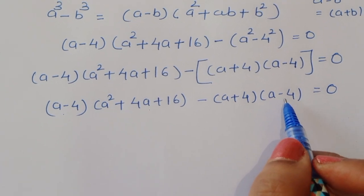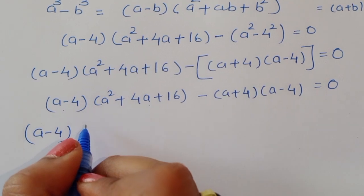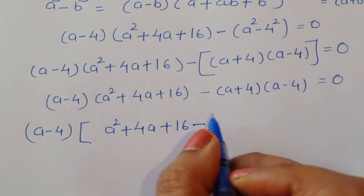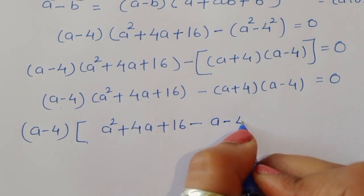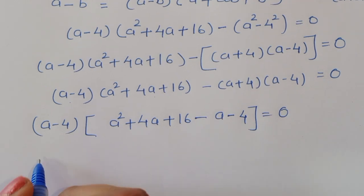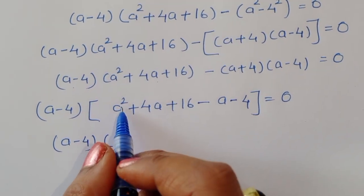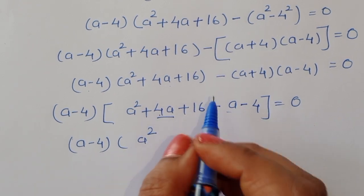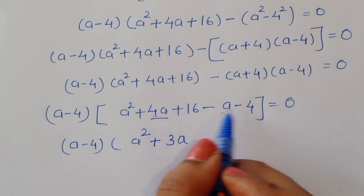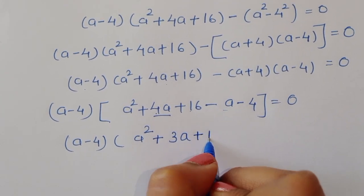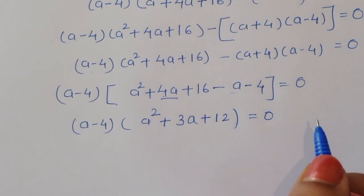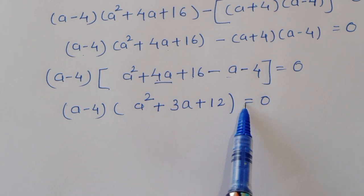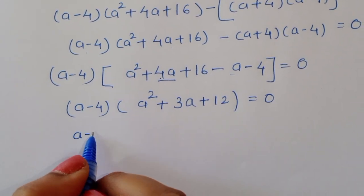We take (a - 4) as a common factor: (a - 4)[(a² + 4a + 16) - (a + 4)] = 0. Simplifying inside the brackets: 4a - 4 = 3, so we get (a - 4)(a² + 3a + 12) = 0.